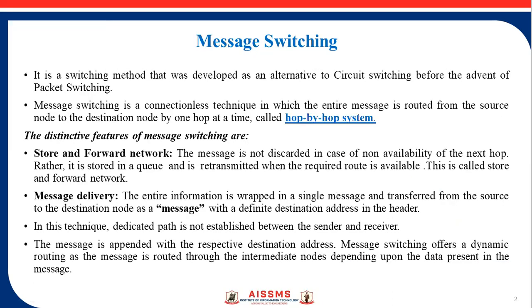The next feature is message delivery. The entire information is wrapped in a single message and transferred from the source to the destination node with a definite destination address in the header. In this technique, a dedicated path is not established between the sender and receiver — unlike circuit switching where a dedicated path was established before sending. In message switching, the message is appended with the respective destination address, and message switching offers dynamic routing as the message is routed through intermediate nodes depending on the data present in the message.